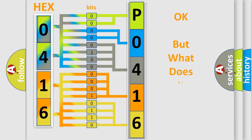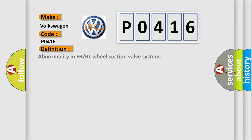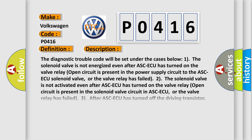We now know in what way the diagnostic tool translates the received information into a more comprehensible format. The number itself does not make sense to us if we cannot assign information about what it actually expresses. So, what does the diagnostic trouble code P0416 interpret specifically for Volkswagen car manufacturers? The basic definition is: Abnormality in FR or RL wheel suction valve system. And now a short description of this DTC code.